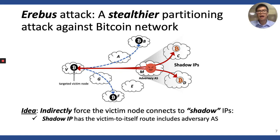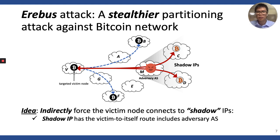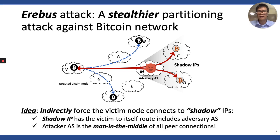The saddle IP is attacker- and victim-specific, which means with a different pair of attacker and victim, the saddle IP sets would be different. In this example, any IP address in AS-C and AS-D on the right-hand side are the saddle IPs because the traffic from the victim to these IPs goes through the adversary. By forcing the victim to connect to saddle IPs, the attacker naturally becomes the man-in-the-middle of the peer connection, and the attack is successful.